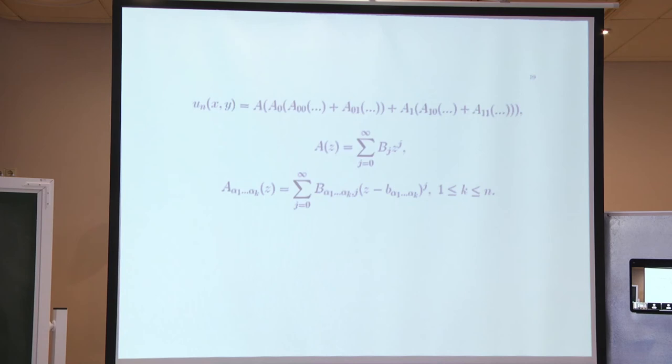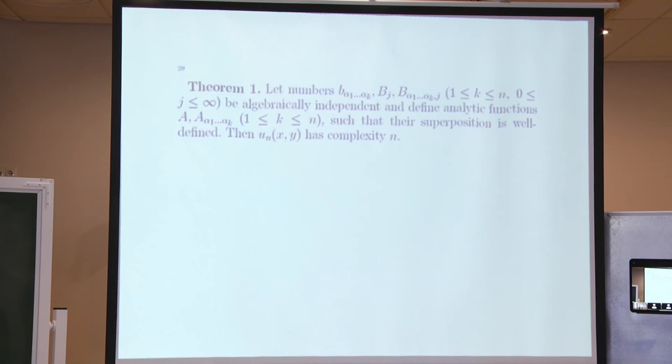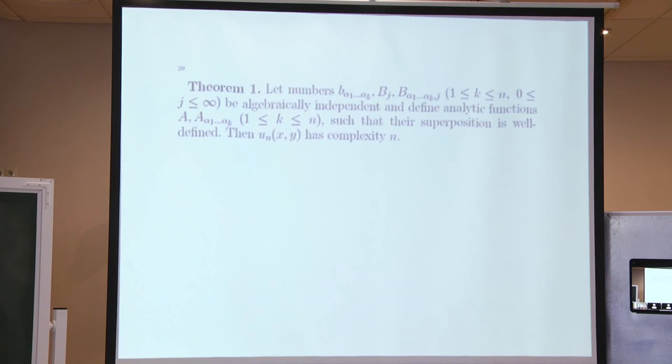Now we are ready to formulate our first theorem on examples of analytic functions of complexity precisely n. Let numbers b, our parameters, be algebraically independent, and define analytic functions a as previously defined such that the superposition u_n is well defined. Then the superposition u_n has complexity precisely n.